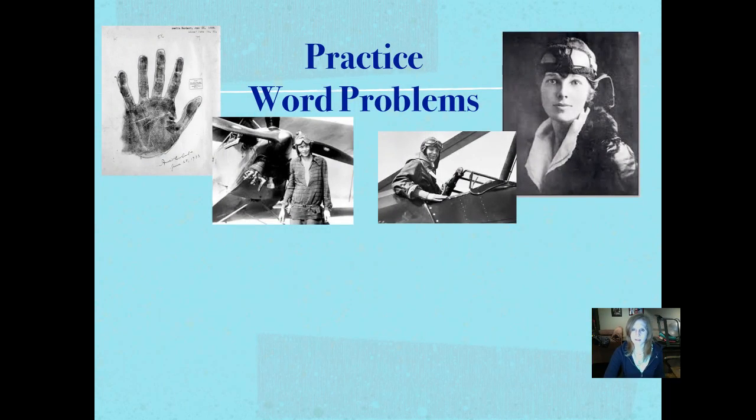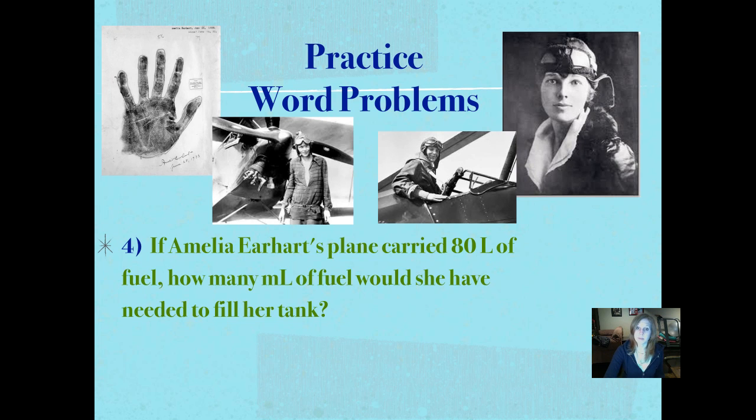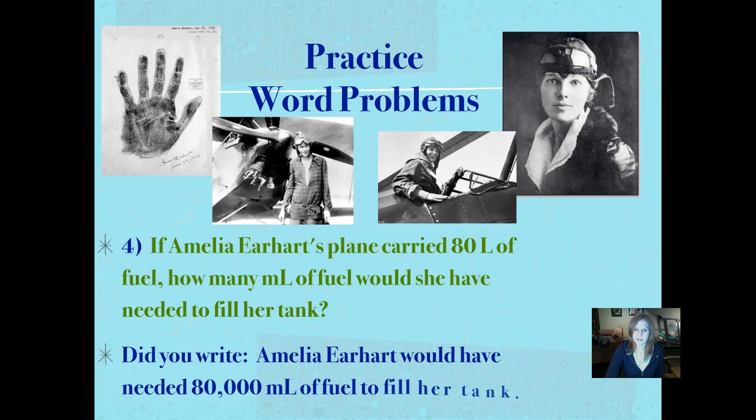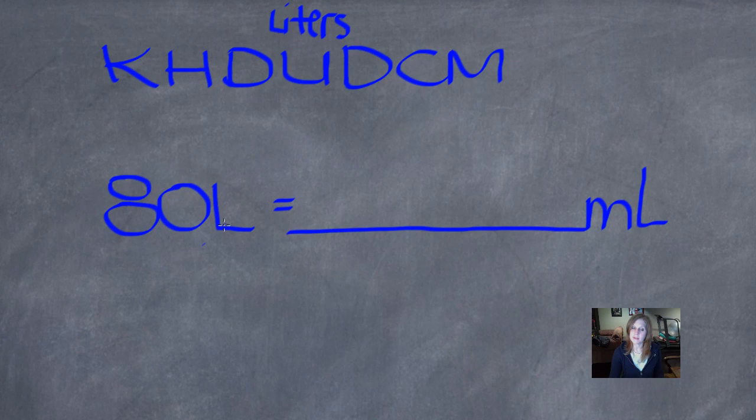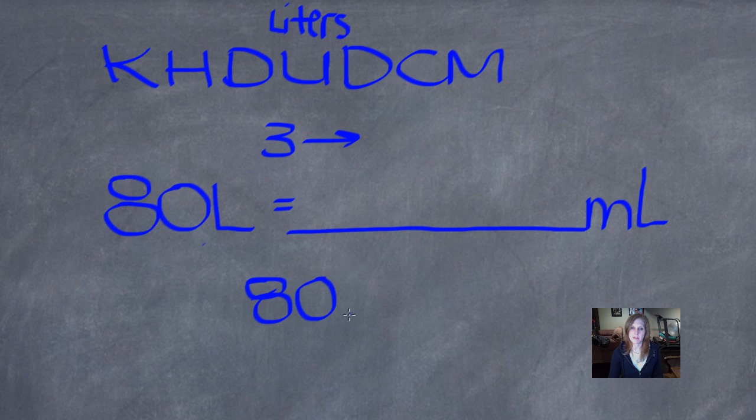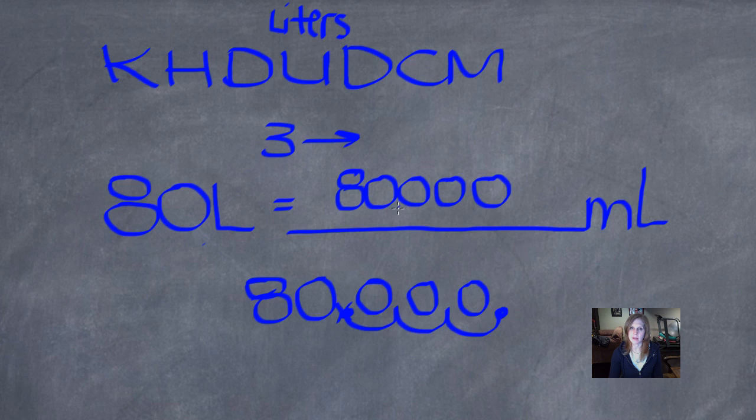So there's some more cool pictures of Amelia Earhart and her plane that she flew. And there's her palm print with her autograph. Number four, if Amelia Earhart's plane carried 80 liters of fuel, how many milliliters of fuel would she have needed to fill her tank? Pause it and push play when you're ready. Did you write in a complete sentence, no pronouns, Amelia Earhart would have needed 80,000 milliliters of fuel to fill her tank? Let's see how we did that. So start with what you know. We know how many liters we have. So we'll start on the liters and we'll jump to milliliters. One, two, three to the right. So we'll rewrite 80 right below that because our decimal is going to be at the end. One, two, three to the right and we have to fill those loops with zeros. So we don't, we've got to have four zeros there. We don't need to put that decimal at the end. It's not a placeholder. But we do have 80,000 milliliters.